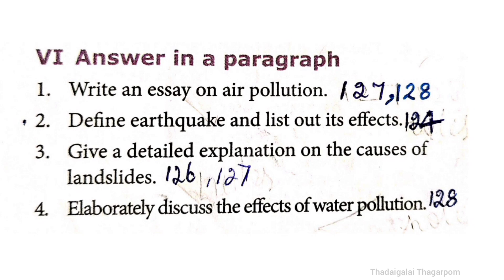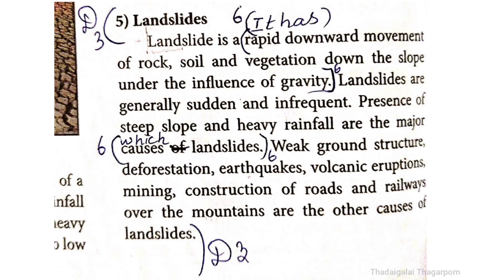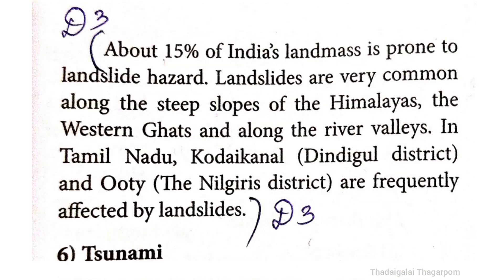The answer is on page 126. Landslide is a rapid downward movement of rock, soil, and vegetation. About 15% of India's landmass is affected by landslides. That is the answer for detail question 3.